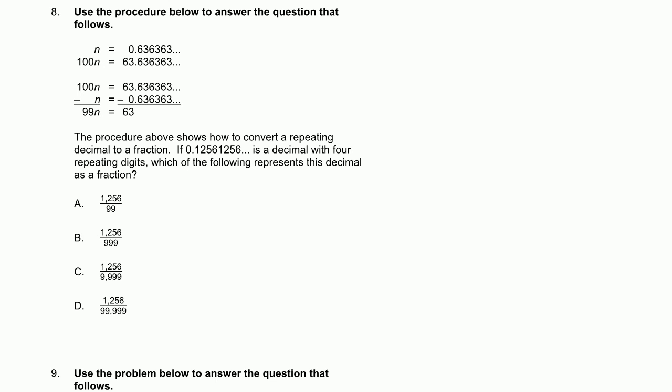Next problem. Go to the next problem. 8. Use the procedure below to answer the question that follows. Okay, n is equal to 0.633. Okay, 100n is equal to 63, so just multiply it by 100. Okay, they're trying to eliminate the repeating decimals. I get it. Next, the procedure above shows how to convert a repeating decimal to a fraction. If 0.1256 is a decimal with four repeating digits, which of the following represents this decimal as a fraction? So what you do, we'll just do with the procedure we did before, and this might bring you back memories from algebra class or pre-algebra class.